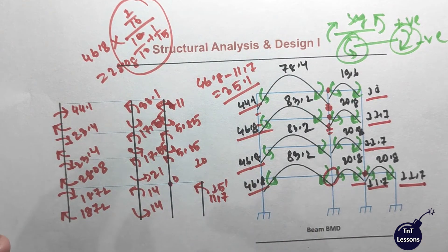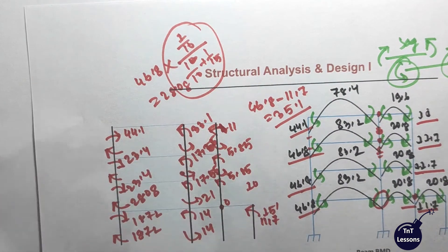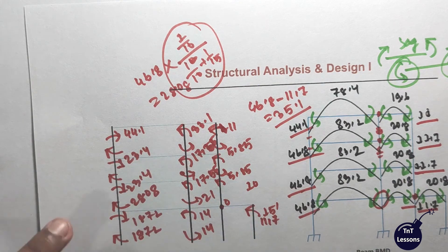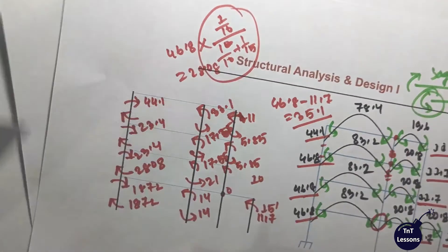And here you can see this side is clockwise. So here you can see the anticlockwise moment — it is 11.7. So basically, I hope you can see this diagram. So what's going on in this diagram — I'll draw it. So here you can see the column bending moment.